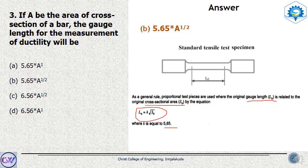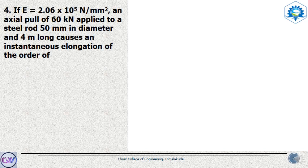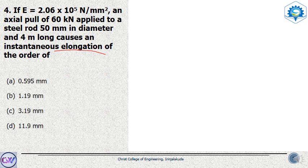Let's look at a numerical question. Given: modulus of elasticity E = 2.06 × 10⁵ N/mm², an axial pull of 60 kN is applied to a steel rod of 50 mm diameter and 4 m length. We are asked to find the elongation. The options are 0.595 mm, 1.19 mm, 3.19 mm, and 11.9 mm. This is a simple question in simple stress and strain.